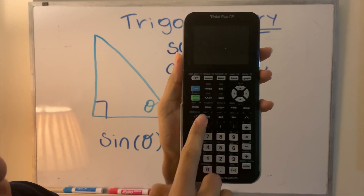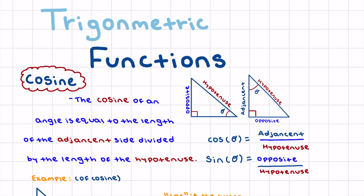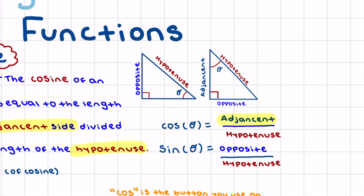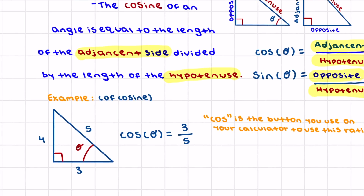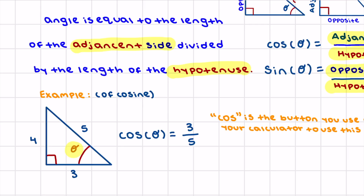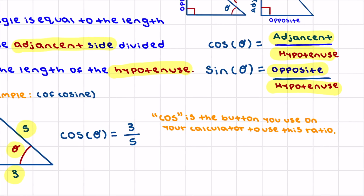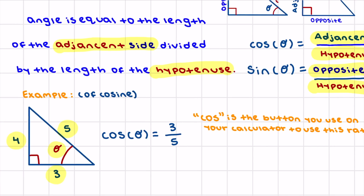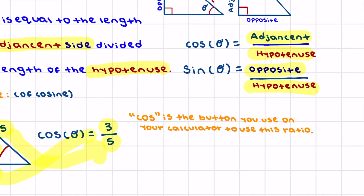Now let's go over cosine. The cosine of an angle equals the length of the adjacent side divided by the length of the hypotenuse, so cosine theta equals adjacent over hypotenuse — different from sine. In our 3-4-5 right triangle, theta points opposite to 4, so 3 is adjacent and 5 is the hypotenuse. Therefore, cosine theta equals 3 over 5. Cosine also has its own button on your calculator.